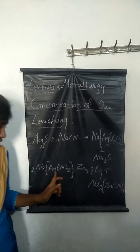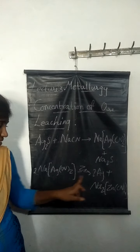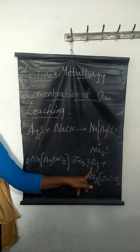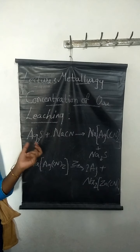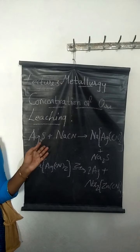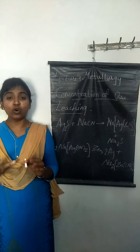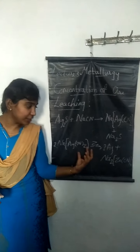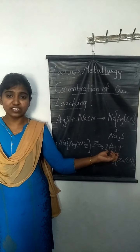The sodium argentocyanide complex is then reduced using zinc metal. Zinc displaces silver, and pure silver is obtained through this reduction process. This is how pure silver can be leached from silver-containing ores. In summary, leaching is a process where the metal is more soluble in a particular solvent, forming a complex that can be reduced to obtain the required metal. It is applicable to aluminium, silver, and gold containing ores.